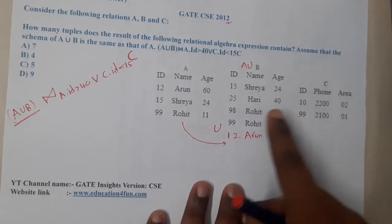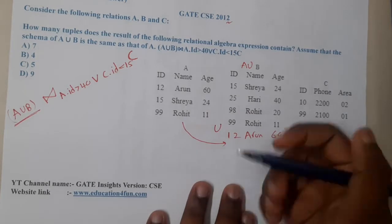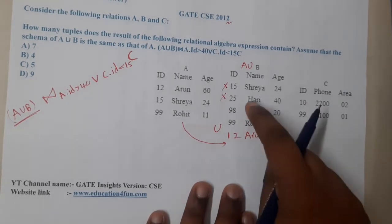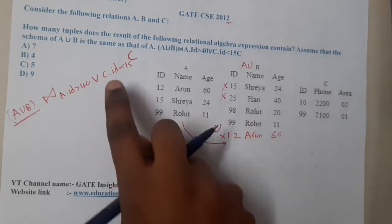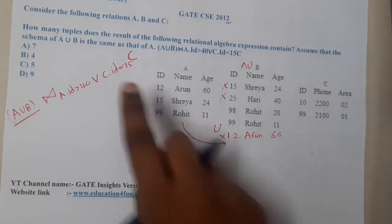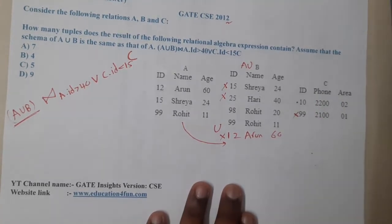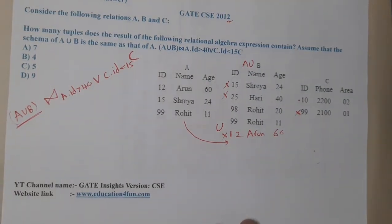Now I need to perform a cartesian product of A union B with C, and then check the conditions. The first condition says A dot id should be greater than 40, which leaves only two entries. Similarly, C dot id should be less than 15, which gives only one entry from C. So if I apply both conditions before the cartesian product, I get two entries from A union B and one from C.